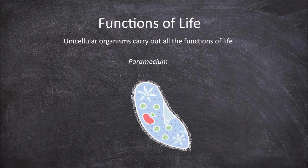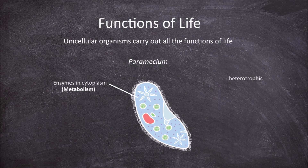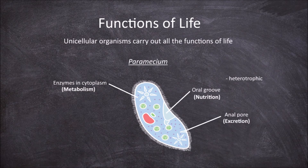Paramecium is an example of a heterotrophic unicellular organism that carries out all the functions required for life. Paramecium contain enzymes within their cytoplasm that enable them to digest food particles. They are heterotrophic and eat smaller unicellular organisms by engulfing them through the oral groove. Solids are then excreted through an anal pore, and liquids through contractile vacuoles.